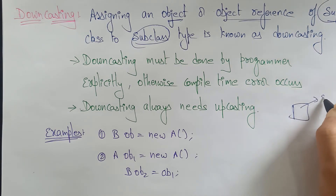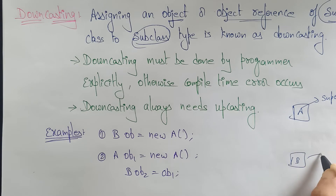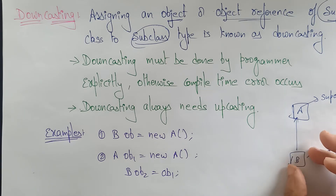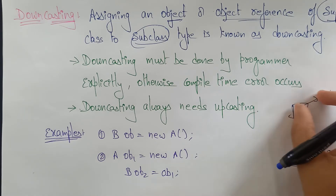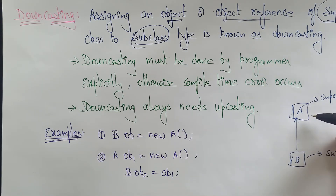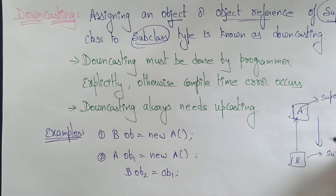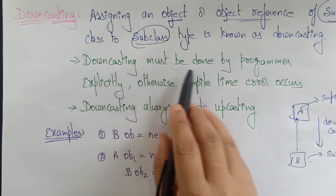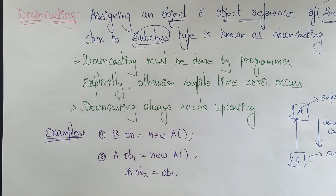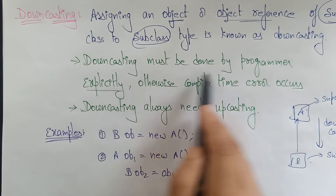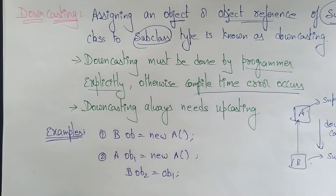So this is superclass A and this is subclass B. Assigning an object or object reference of superclass to subclass — that technique we call downcasting. Downcasting must be done by the programmer explicitly. Upcasting means the system implicitly can do it, but downcasting must be done by the programmer explicitly, otherwise a compile-time error will occur.